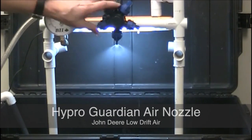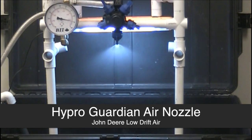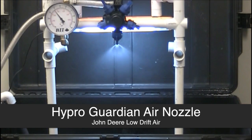The Hypro Guardian Air Nozzle, also known as the John Deere Low Drift Air or LDA, very much like the other nozzles. It produces a fairly fine spray at the higher pressures, so for coverage we can go there. It maintains a fairly reasonable spray pattern down to 30 PSI or slightly lower perhaps in some cases. It should be operated like all the other ones, between 60 and 70 PSI.